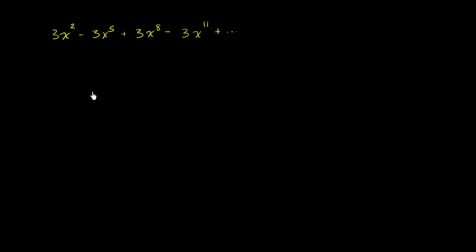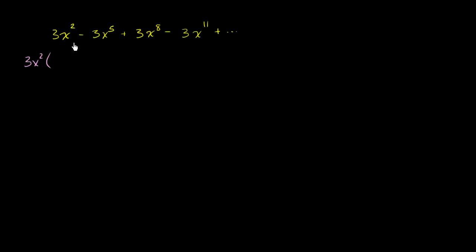The first thing I want to do is factor out a common factor — this might simplify it in terms of trying to express it. It looks like all of these are divisible by 3x². So I can rewrite this as 3x² times the quantity 1 minus x to the third power plus x to the sixth power minus x to the ninth power, and a pattern is starting to emerge.